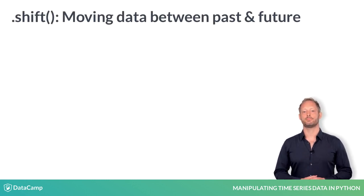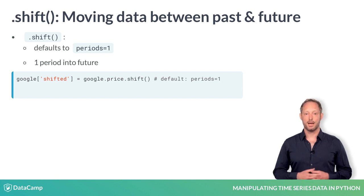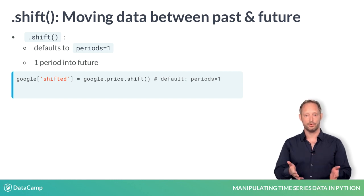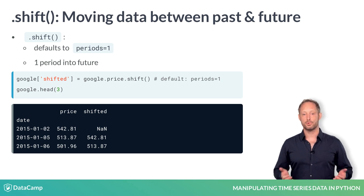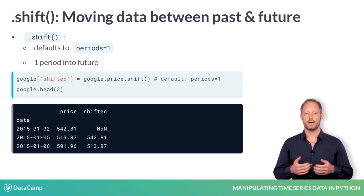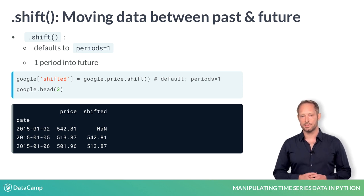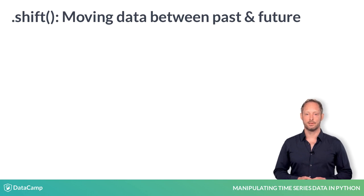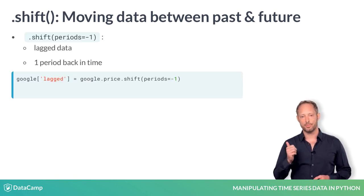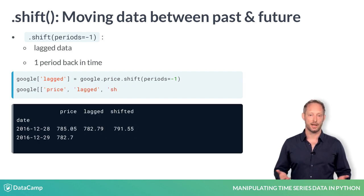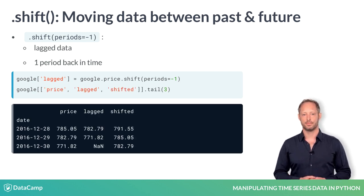Your first time series method is .shift. It allows you to move all data in a series or data frame into the past or future. The shifted version of the stock price has all prices moved by one period into the future. As a result the first value in the series is now missing. In contrast, the lagged version of the stock price is moved one period into the past, and in this case the last value is now missing. To shift data into the past, use negative period numbers.